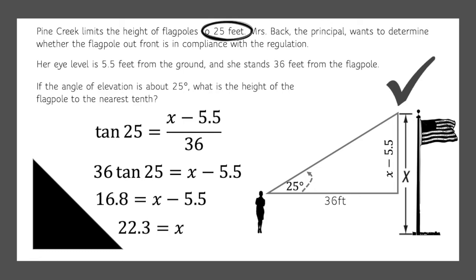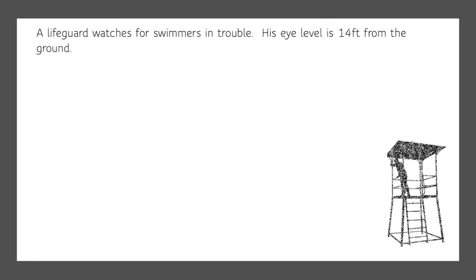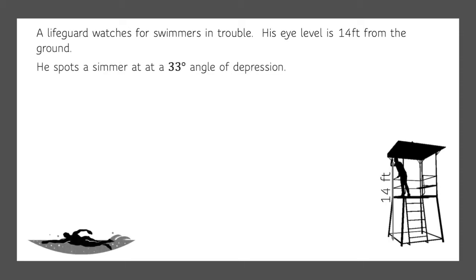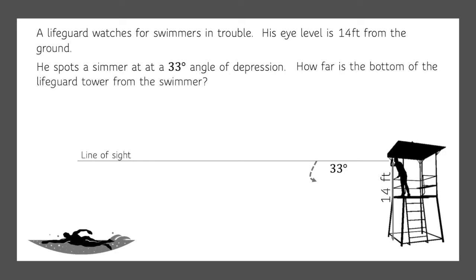Let's do one more. Here we have a lifeguard watching for swimmers in trouble. His eye level is 14 feet from the ground. He spots a swimmer at a 33 degree angle of depression. So remember, from line of sight we're going down 33 degrees - that gives us our angle of depression.